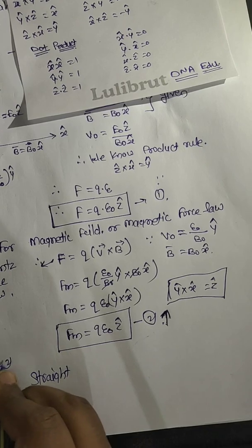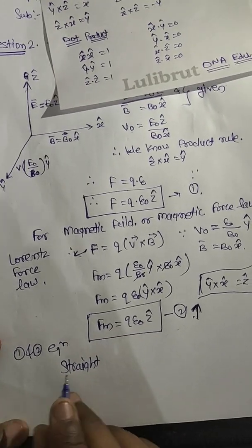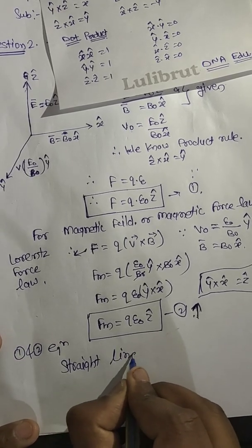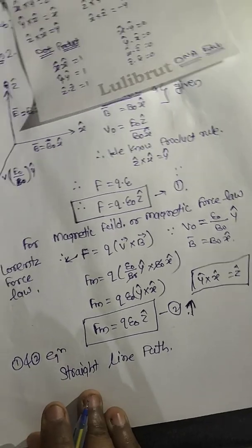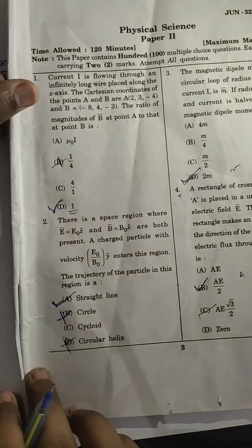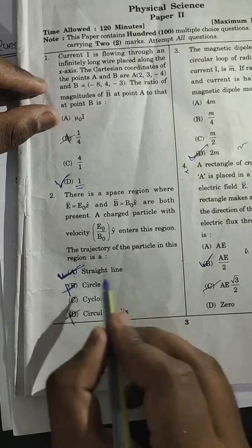First and second equation are going to show straight line path. So if you are going to see in the question, there is option straight line. So the answer is straight line.